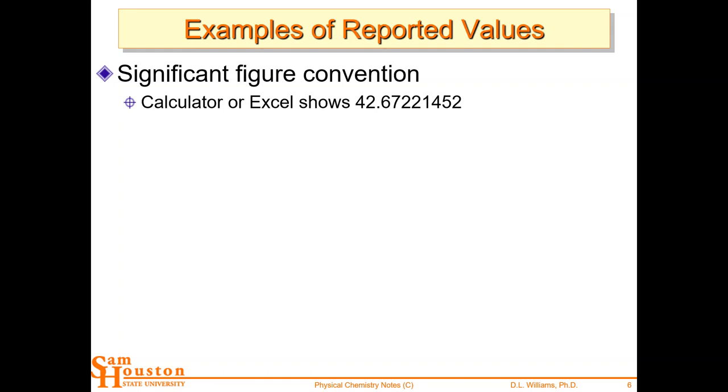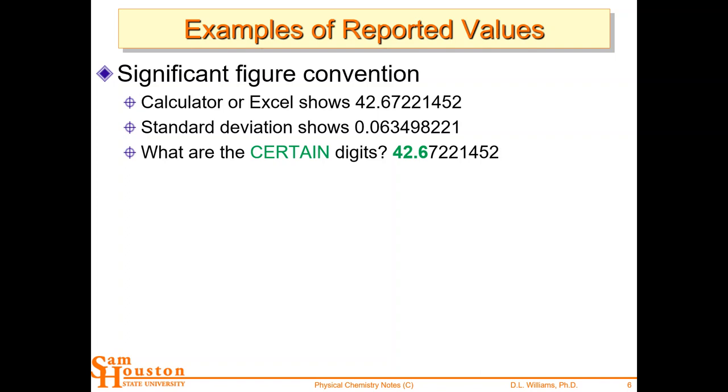So let's look at these examples. So for the significant figure convention, the calculator or Excel gives you this long number, 42.67221452. You know that not all those digits are reasonable, right? You're not going to keep all of those. Okay. And your standard deviation, either from the ANOVA table or from your calculation on your calculator, gets 0.06349, so on, so on. Okay. So what are the certain digits? How do I know 42.6 are certain? Because my uncertainty begins in the next decimal place. Okay. So the uncertain digits start there.